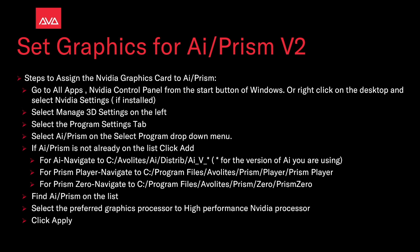Select AI or Prism on the Select Program drop-down menu. If AI or Prism is not already on the list, click Add. For AI, navigate to the C drive > Avalites > AI > Distrib > AI V, then the version of AI you are using.